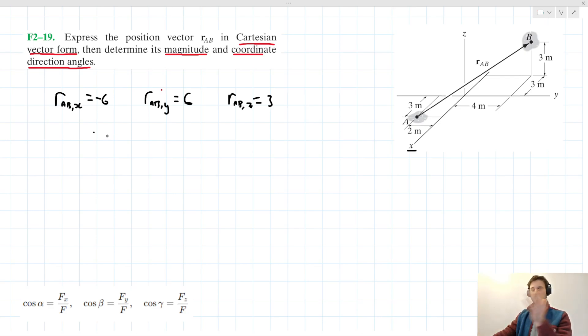We have everything we need to show this in Cartesian vector form. We could say then r_AB (with the underbar to show that it's a vector) equals -6i + 6j + 3k. That's our solution to the first part of this problem.